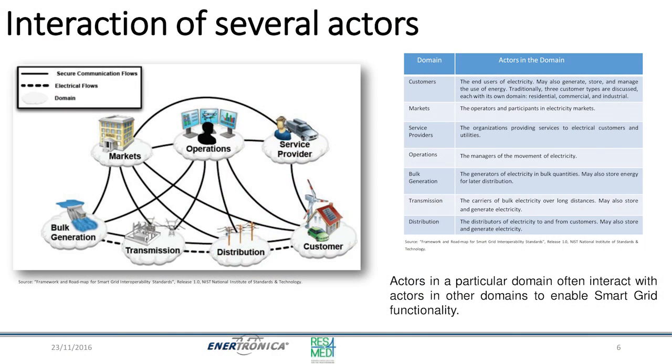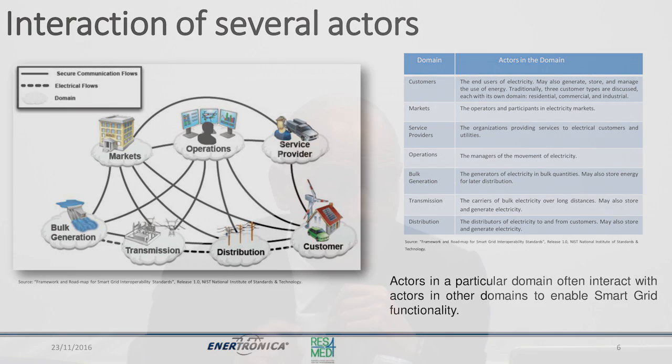Another problem of a smart grid is that we need a lot of interaction, so communication is one of the most important points. The main actors are: markets, operation, service provider, generation, transmission, distribution, and the customer. The customer is very different from what we had in mind — it's a new kind of customer, maybe with wind, PV, or both wind and PV, and why not an electrical vehicle too.